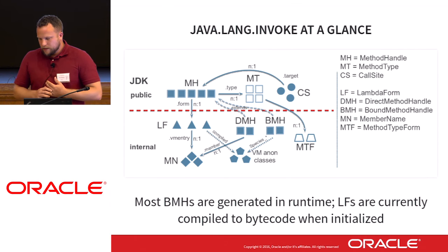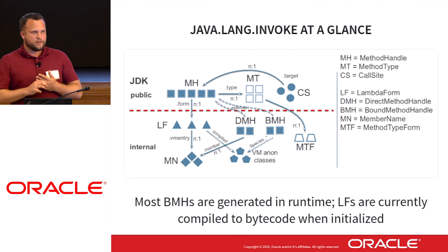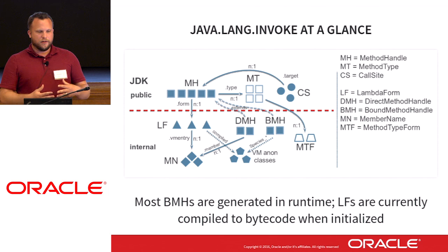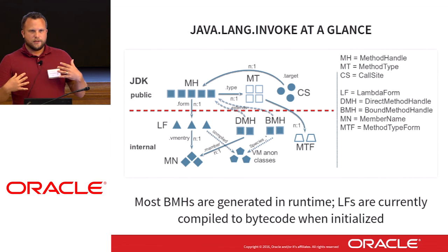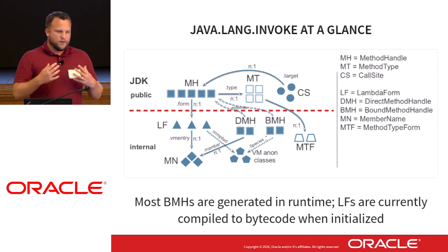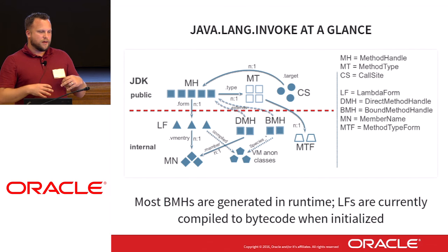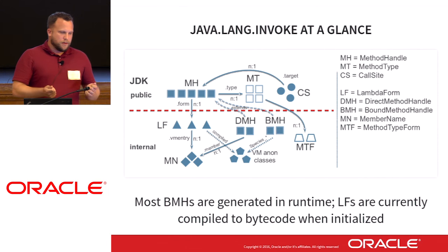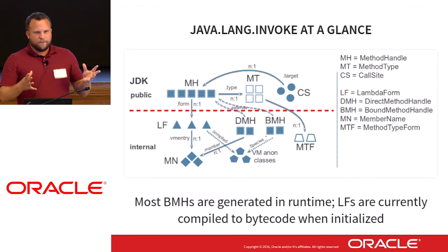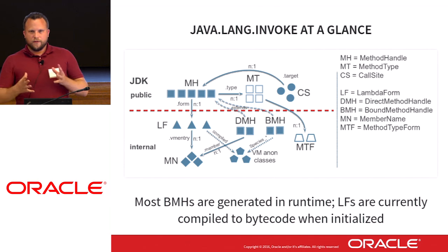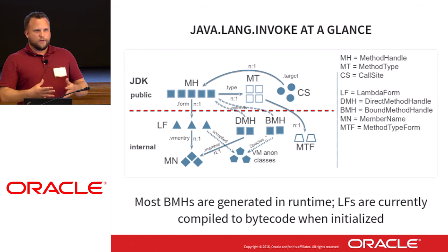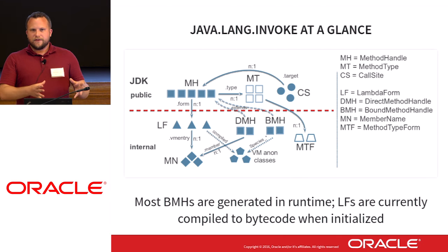java.lang.invoke is a beautiful creation. Most of the implementation details relevant for startup are actually on the Java side of things. We have method handles created by the method factory, method types, call sites being set up. Underneath these, in the internal API, we have Lambda forms, direct method handles, and bound method handles. Bound method handles represent species of methods of certain arities and certain class arguments. So if you're using a method handle that takes a long and returns a long, you will have some species representation of that in the bound method handles.